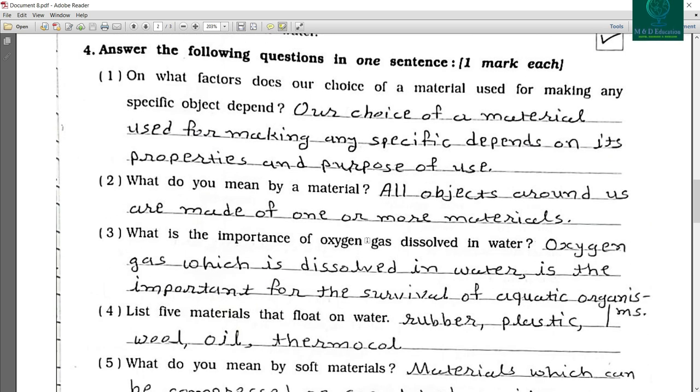On what factors does our choice of a material used for making any specific object depend? Our choice of a material used for making any specific depends on its properties and purpose of use.